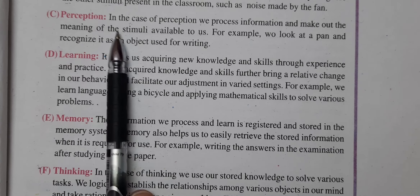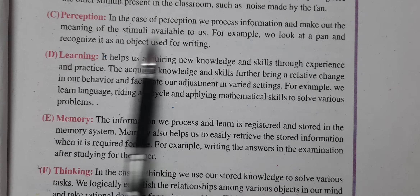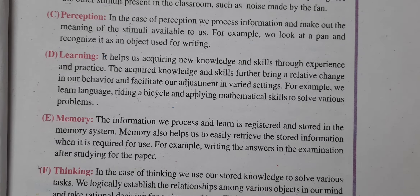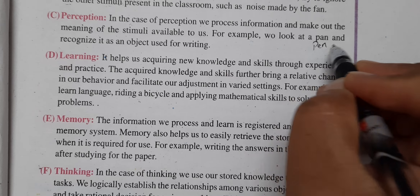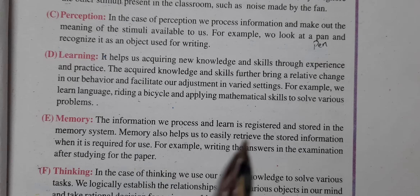Perception — in which we process information and make meaning of the stimuli available to us. For example, we look at a pen and recognize it as an object used for writing. We analyze further: this is a cello pinpoint pen and it is black in color. That is the perception of understanding how we recognize things.